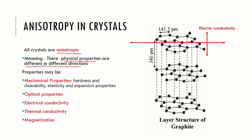Anisotropic properties can be their mechanical property such as hardness, elasticity, expansion property, or it may be optical property such as refractive index.